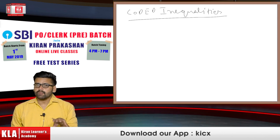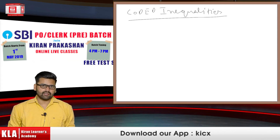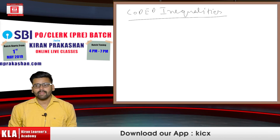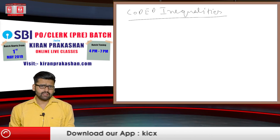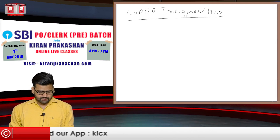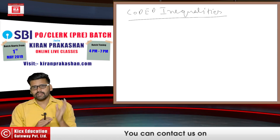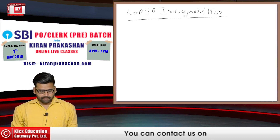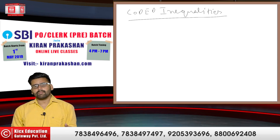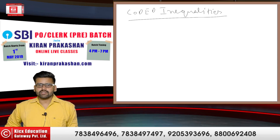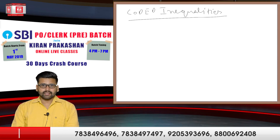Coded inequalities are sometimes asked for three marks, similarly input-output also sometimes comes for three marks — it varies. But if puzzle and syllogism appear, they almost always carry five marks. So let's start by talking about coded inequalities first.